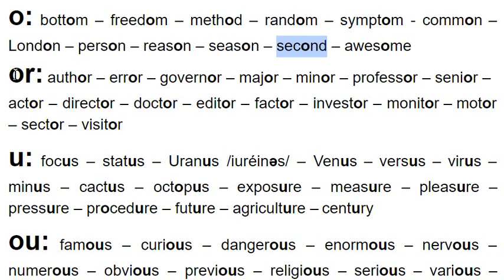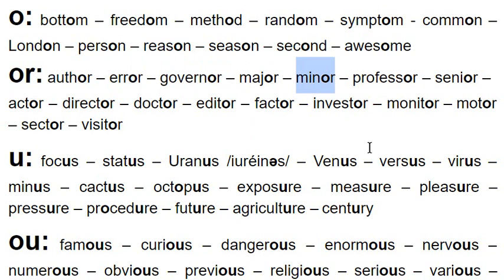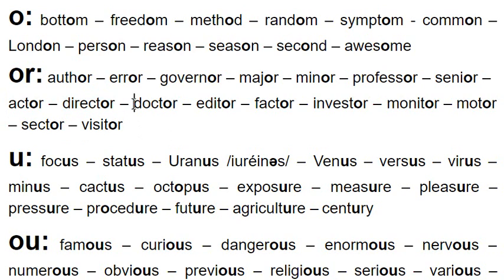The O-R spelling: awesome. Author. Error. Governor. Major. Minor. Professor. Senior. Actor — not 'actor', actor. Director — you can pronounce both ways: director or director. Doctor. Editor. Factor. Investor. Monitor. Motor. Sector. Visitor.